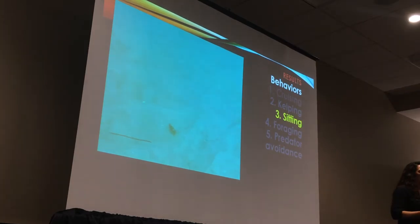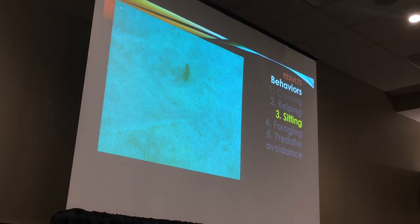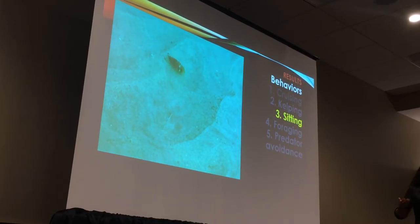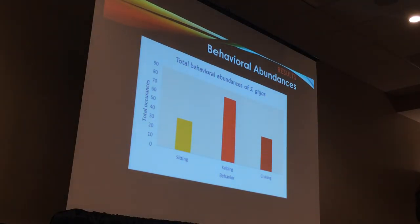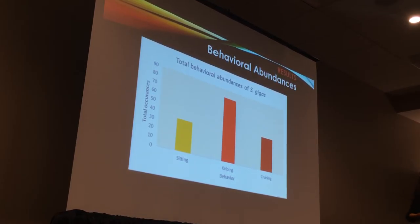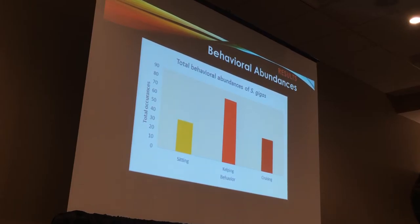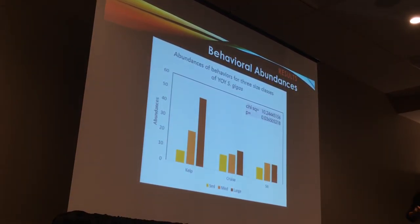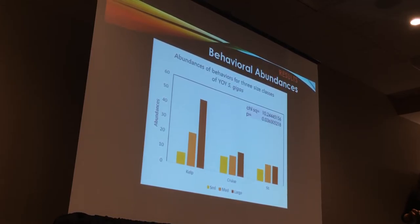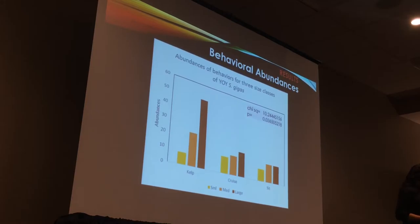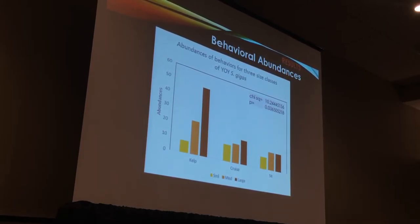Another behavior is called sitting — they're not actually sitting, but they hang out in tiny little rivets and just wiggle back and forth as the surge comes in and out, possibly to avoid the surge or to avoid detection by predators. When we calculate total abundances across behaviors — sitting, cruising, or kelping — most of the time these individuals are kelping, which is interesting. But when you break it down by size class, all three size classes — small, medium, and large — should have the same relative abundance of behaviors, but they don't. We tested this with a test of homogeneity and found that kelping behaviors are mostly done by the larger individuals — maybe because they're orange like the kelp, or more physically developed and therefore better able to kelp without being blown around by the surge.